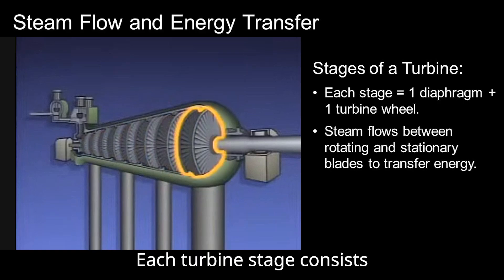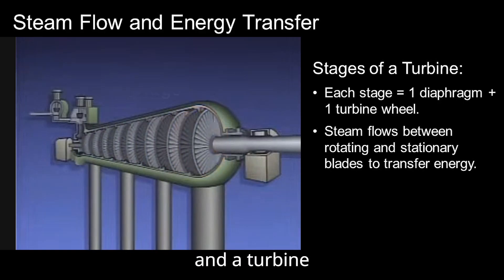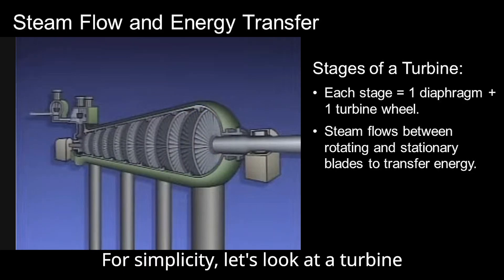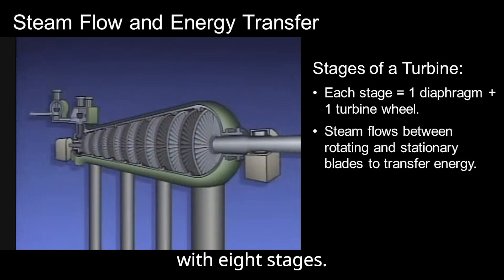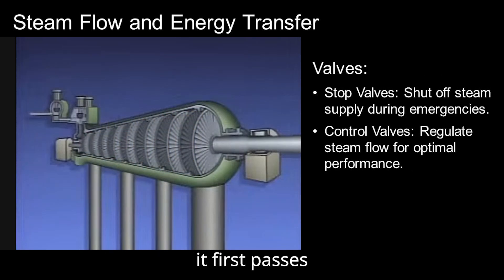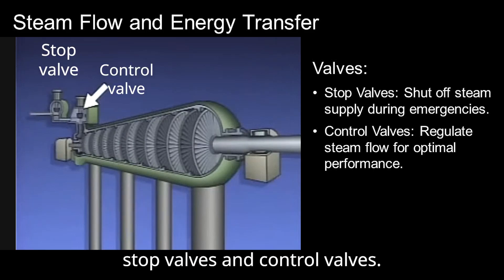Each turbine stage consists of one diaphragm and one wheel, and a turbine may have a high number of stages. For simplicity, let's look at a turbine with eight stages. Before the steam enters the turbine, it first passes through two types of valves: stop valves and control valves.